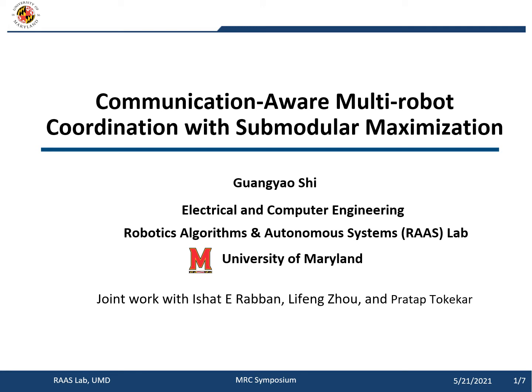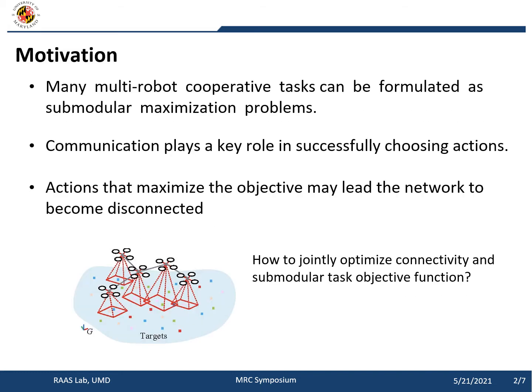In this video, I will present our recent work on communication-aware multirobot coordination with submodular maximization. We are mainly concerned about multirobot coordination problems. It turns out that many multirobot cooperative tasks can be formulated as a submodular maximization problem, which is a special type of discrete optimization problem.